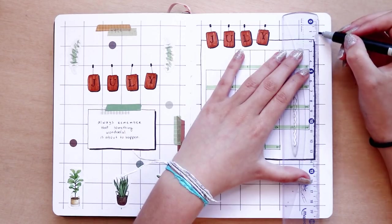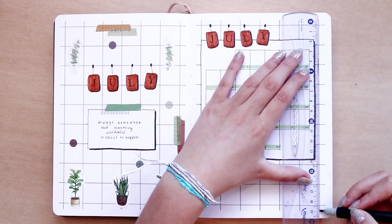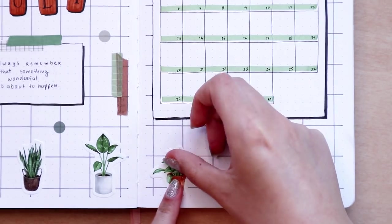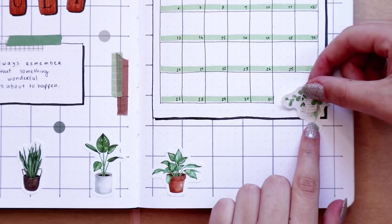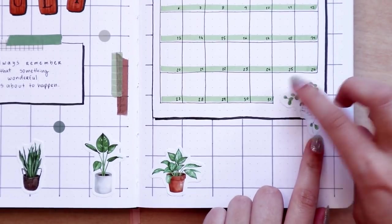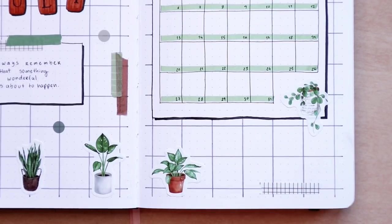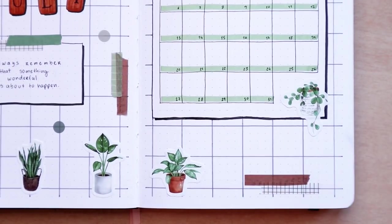As I have been doing for the last couple of months, my real time bullet journal setup for July is going to be up on my channel next week where you can plan your month with me in real time. And it's where I talk about the pages and answer your questions while we listen to some soft lo-fi music.